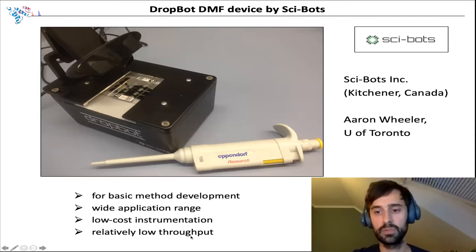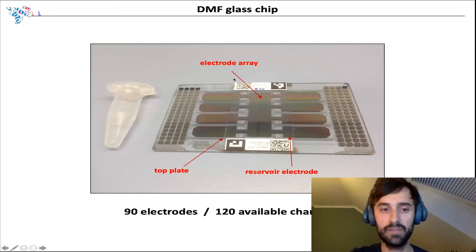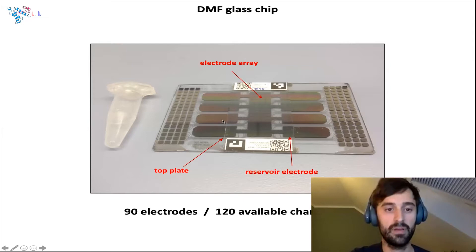We also purchased glass chips from Cybots. These are actually produced in a clean room. They have 90 electrodes you can use, but the DropBot has the capacity to actuate 120, so there is room for more. Of these 90 electrodes, we have eight reservoir electrodes where we can load samples into the chip.